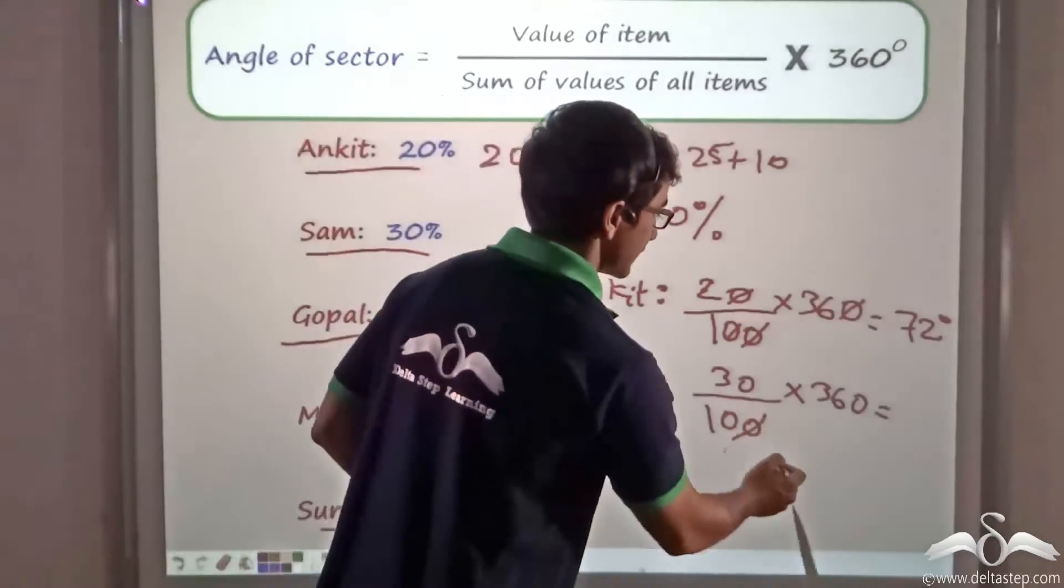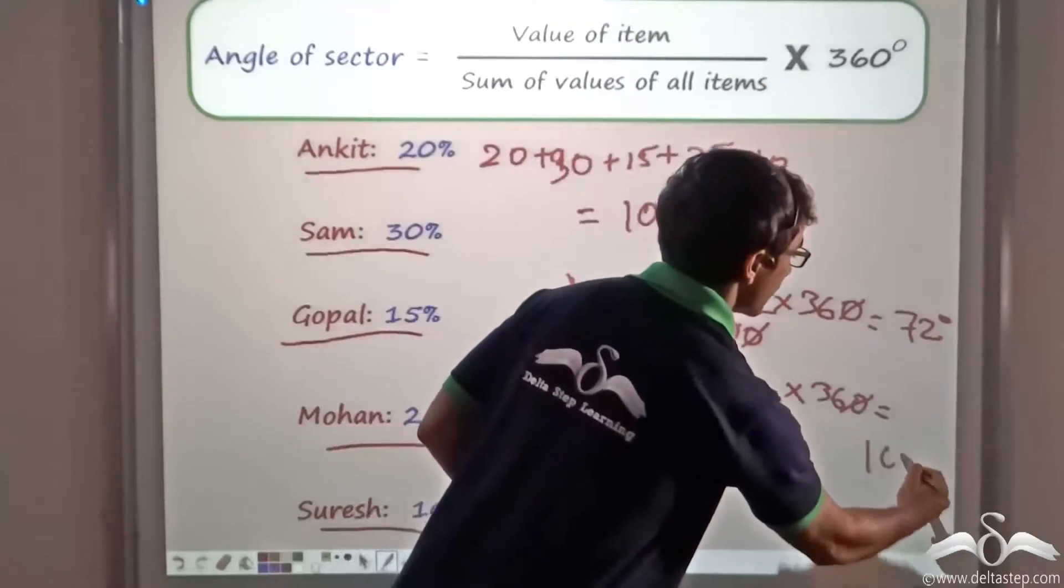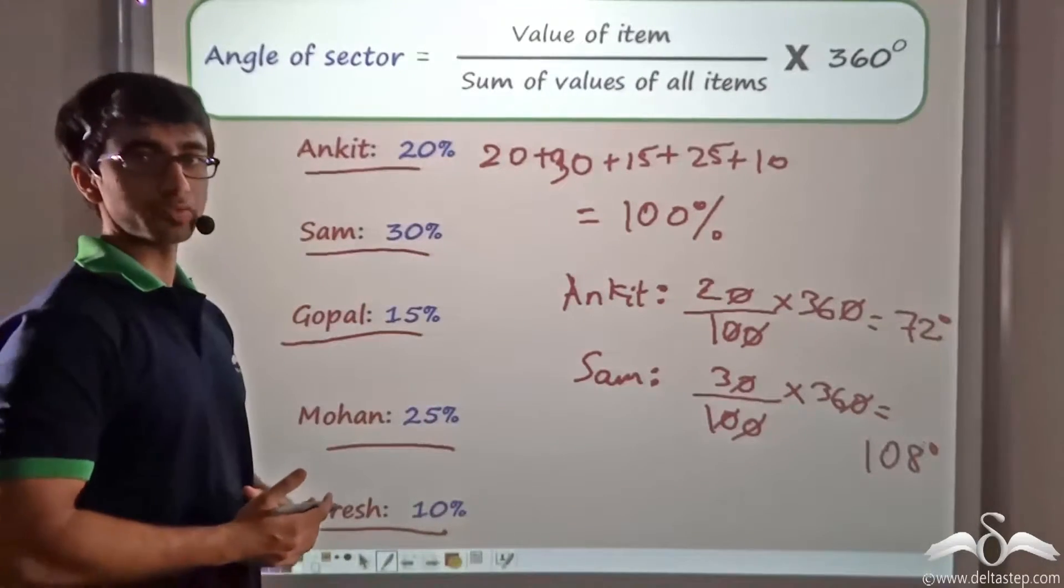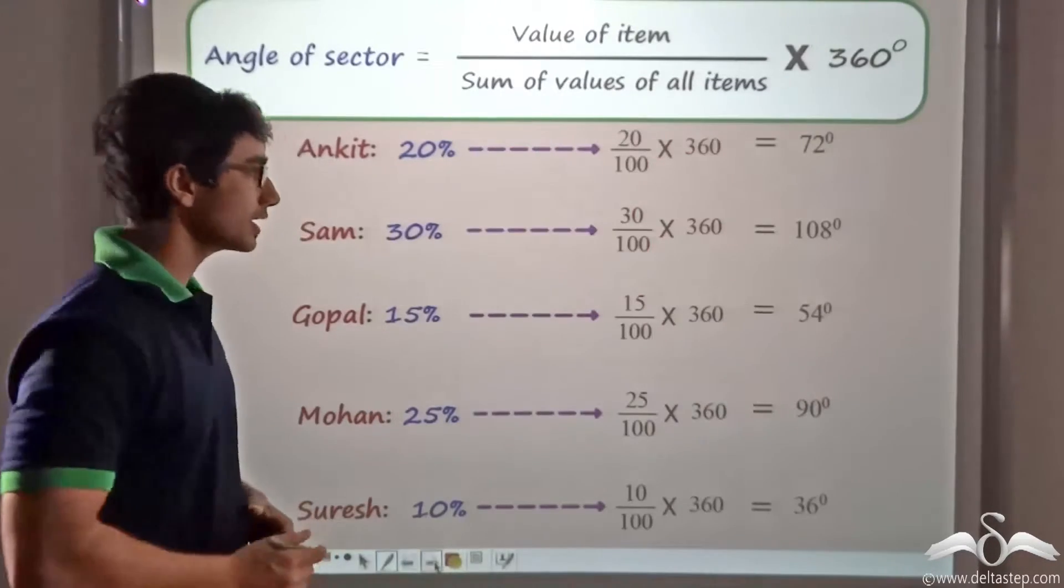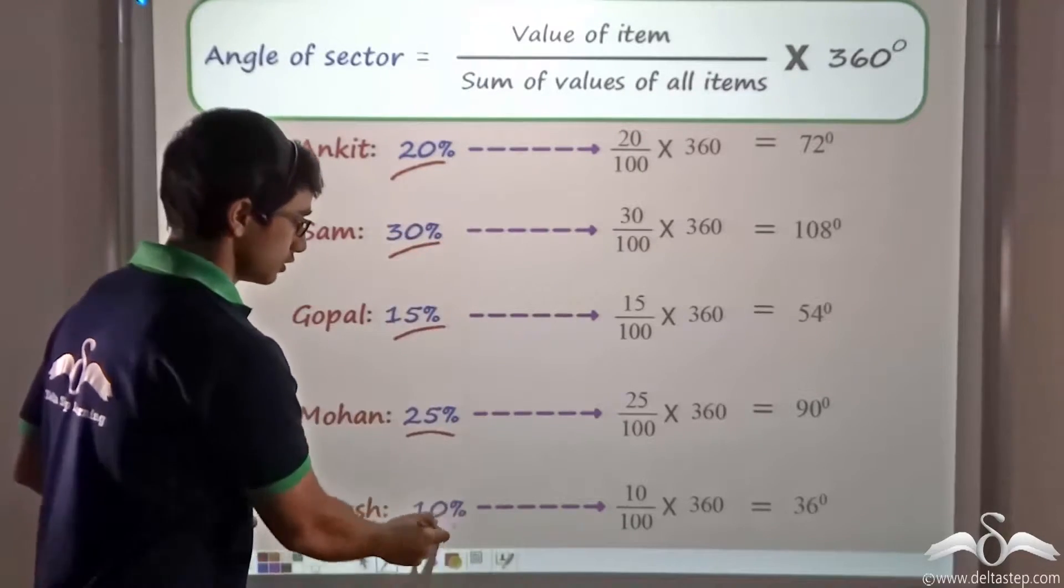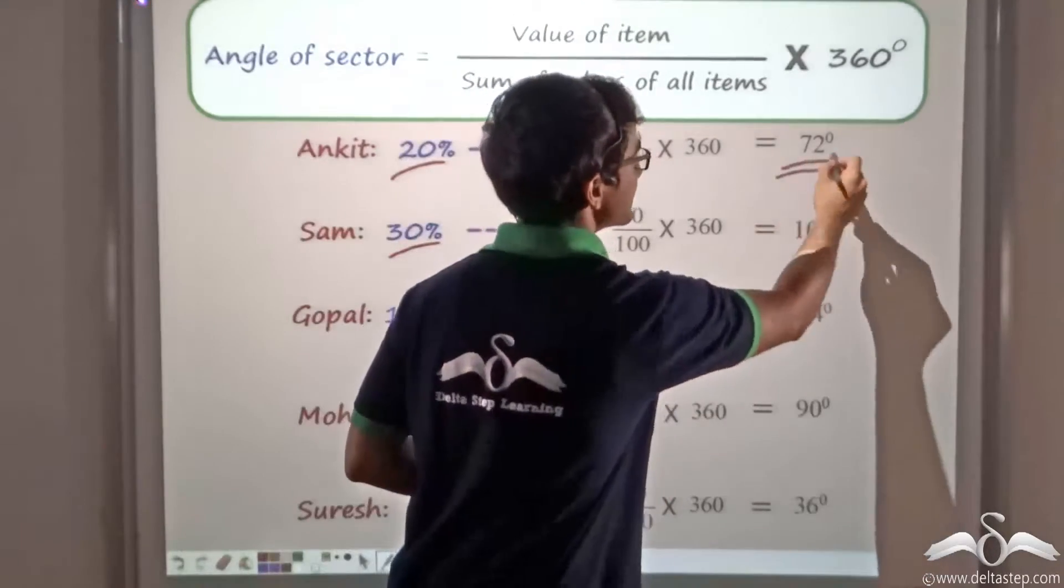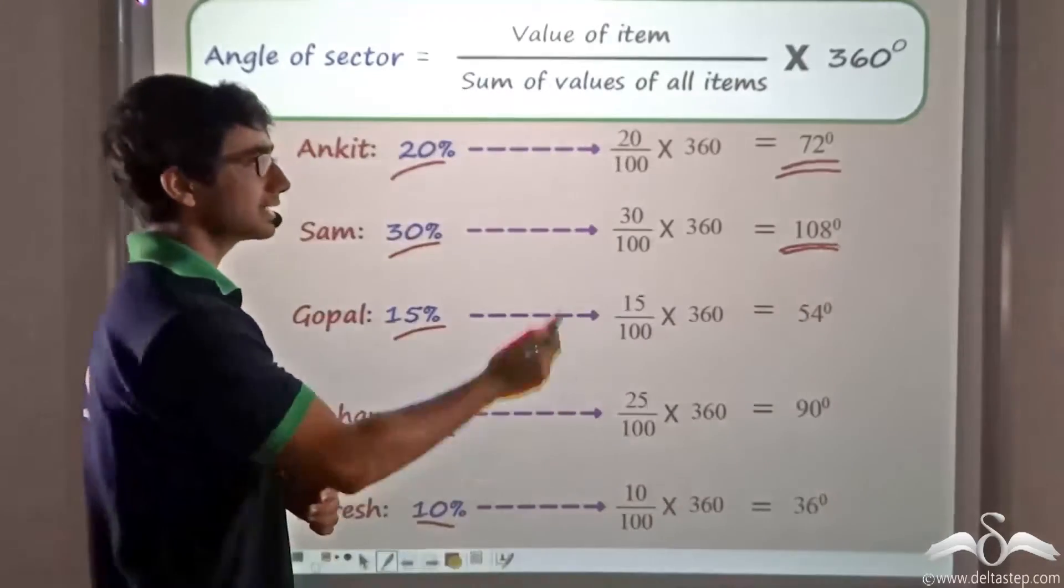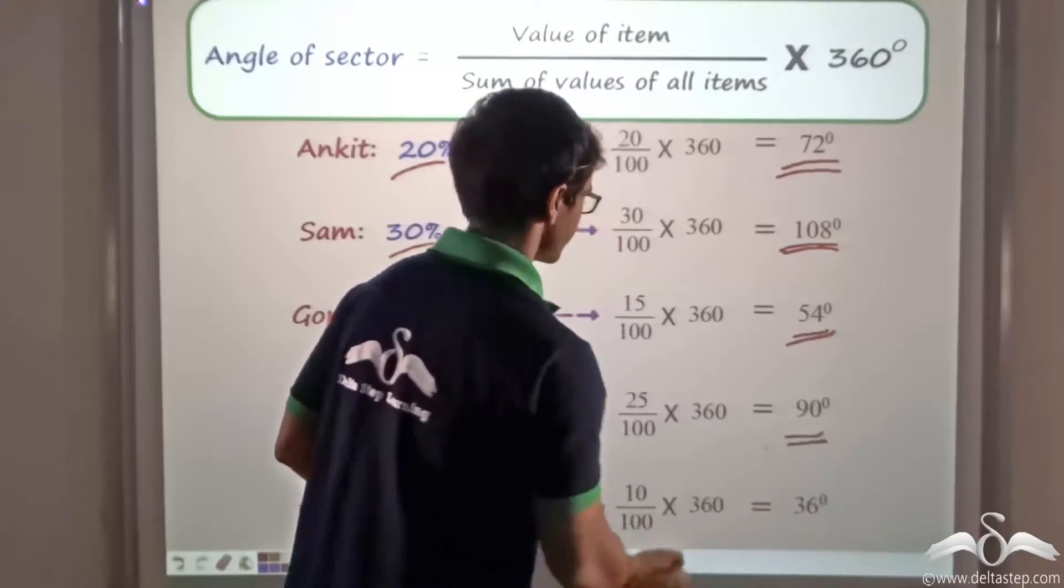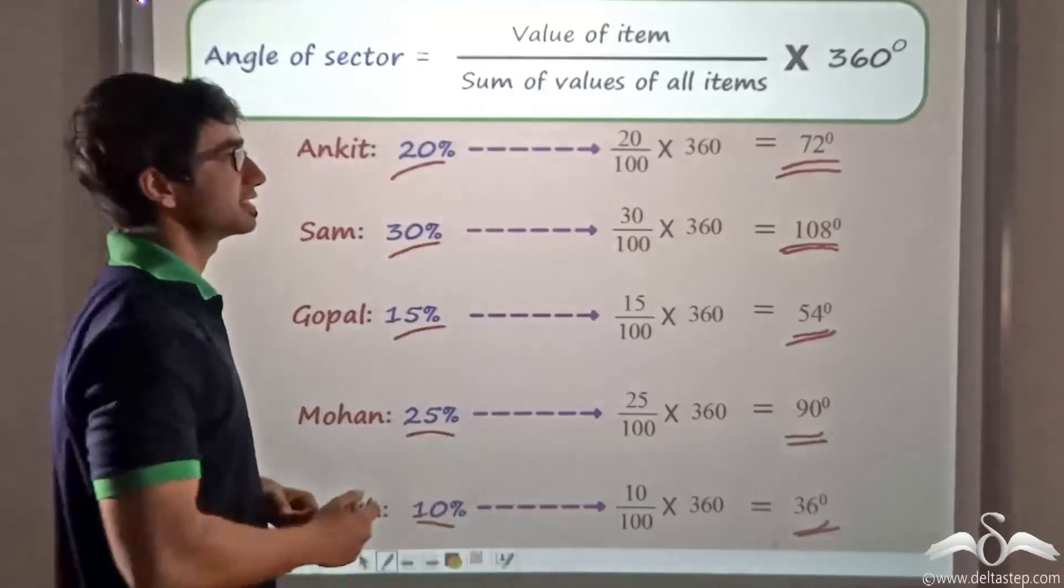Similarly for Sam, I cancel out this zero and these zeros, so I get 108 degrees. That is the angle of the sector for Sam's plot of land. In a similar manner, if I proceed with all the sons with their respective values for their plot of land, I find that for Ankit I get 72 degrees, for Sam 108 degrees, for Gopal 54 degrees, for Mohan 90 degrees, and lastly for Suresh I get 36 degrees.